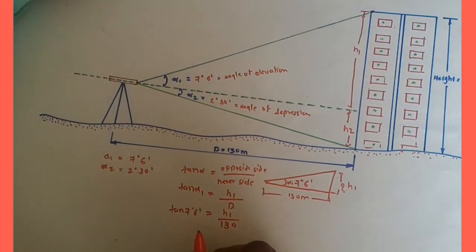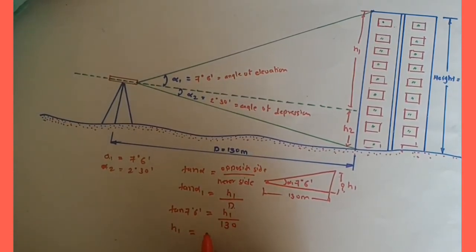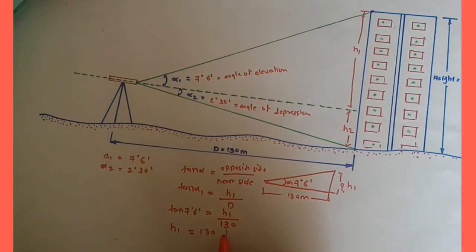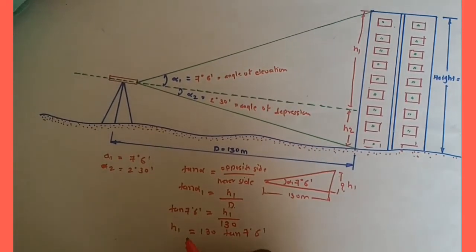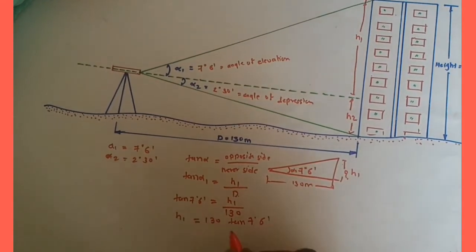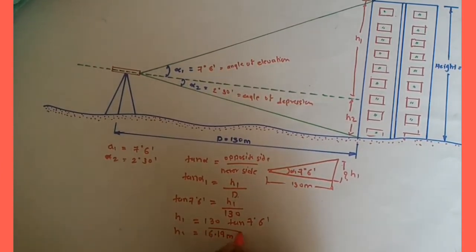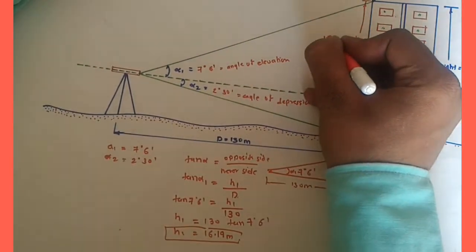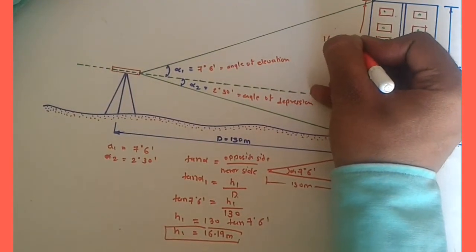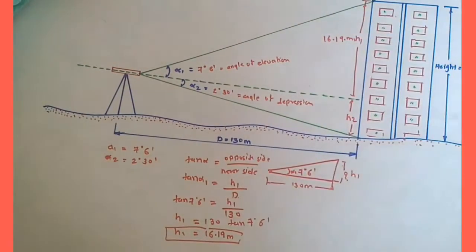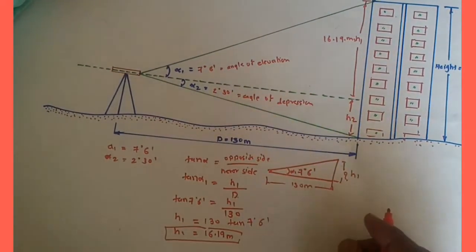Calculating this, h1 is equal to 130 times tan of seven degrees six minutes. Your answer for h1 will be 16.19 meters.